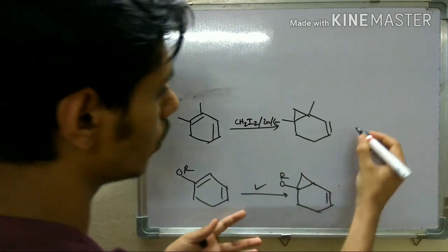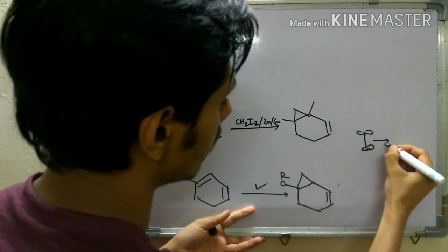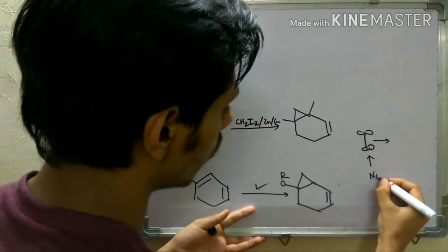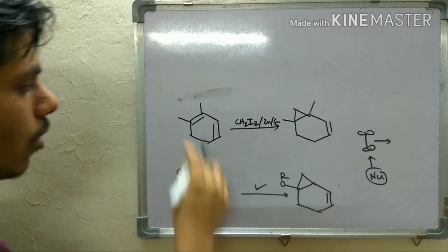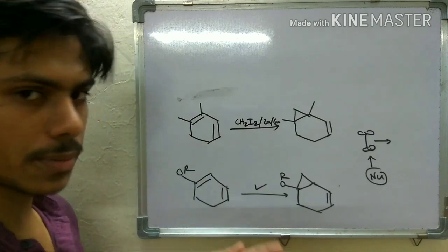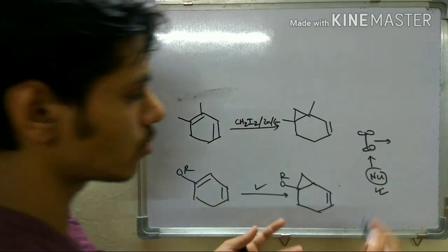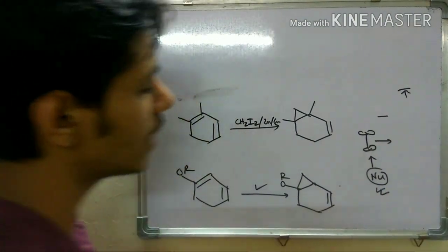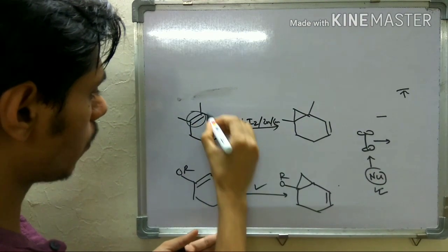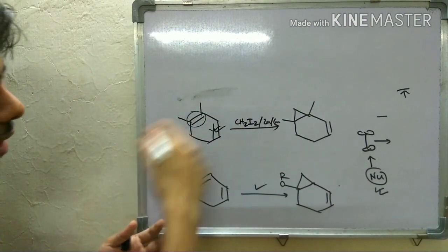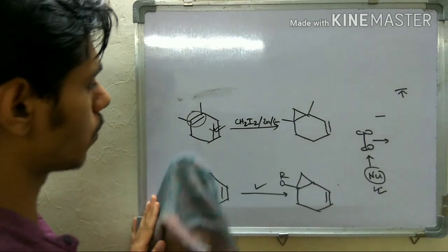Why does the more substituted double bond react? Because the alkene acts as the nucleophile in this reaction. When the alkene is more substituted, its nucleophilicity increases — in other words, the energy of its HOMO increases. Higher HOMO energy means higher reactivity. So the more substituted double bond is more reactive, which is why only it undergoes cyclopropanation.